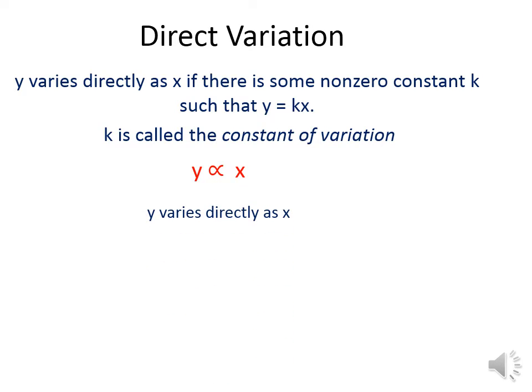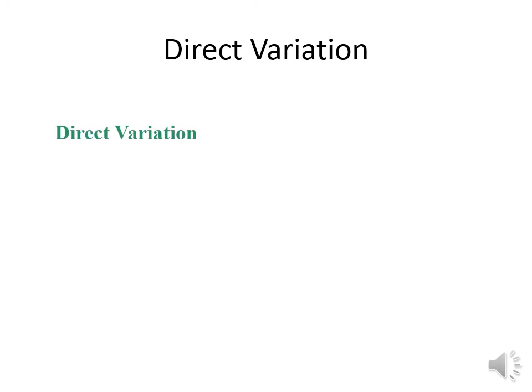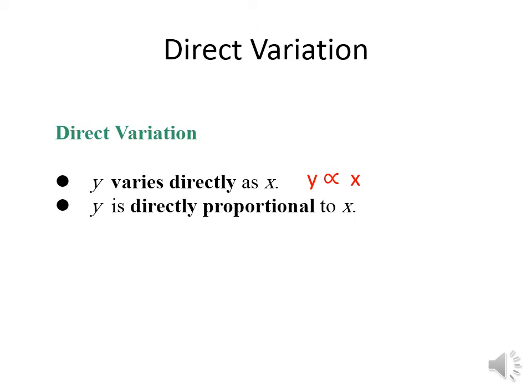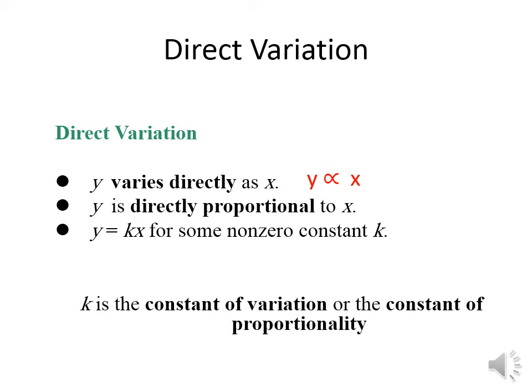We can say that this is a direct variation. If we say that y varies directly as x, or y is directly proportional to x, that means y equals k times x. k is a non-zero constant, meaning k is not equal to zero. k is called the constant of variation or constant of proportionality.